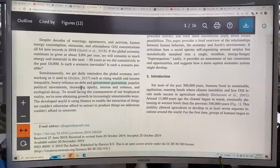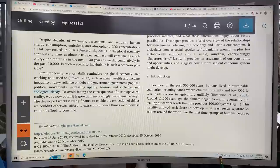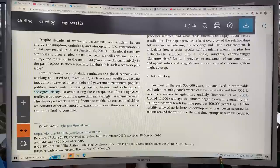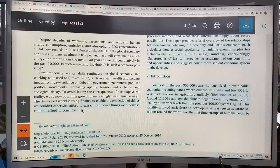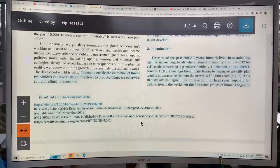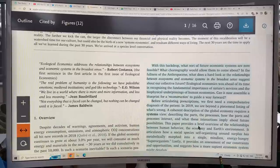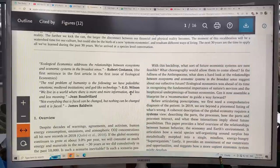There is heavy reliance on debt and government guarantees. There's populist political movements increasing apathy, tension and violence and ecological decay. We're now obtaining growth in increasingly unsustainable ways. The developed world is using finance to enable the extraction of things we couldn't otherwise afford to extract and produce things we otherwise couldn't afford to consume. We're in these vicious feedback cycles.